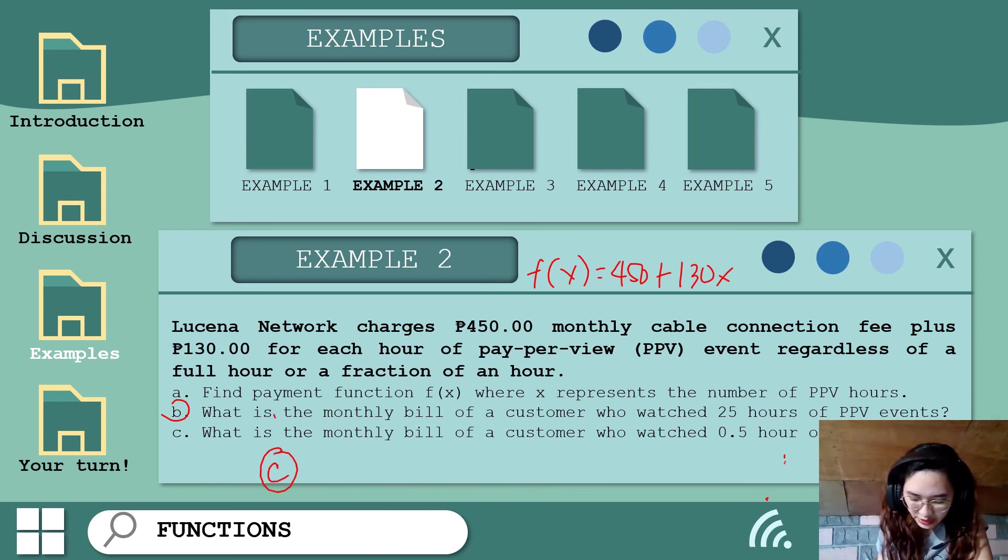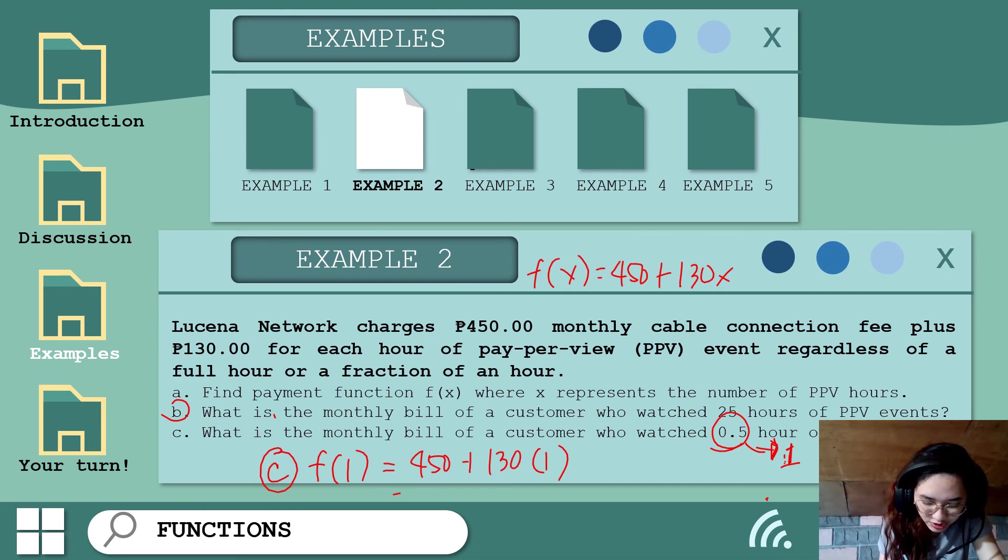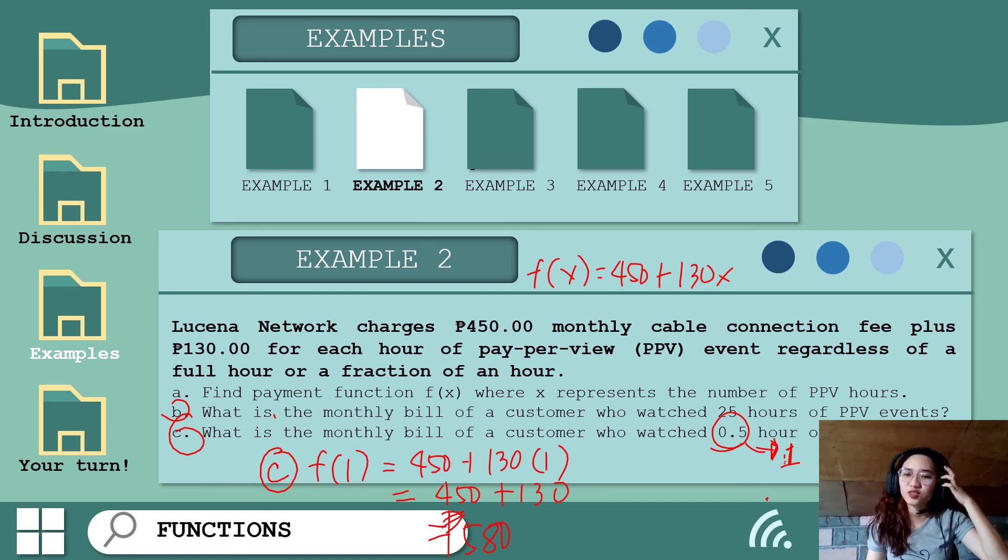What will be the monthly bill of a customer who watched 0.5 hour of pay-per-view event? But in our problem, it says regardless if it's a fraction of an hour, it will still be charged 130 pesos per hour. So 0.5 hours is billed as 1 hour. F(1) = 450 + 130(1) = 450 + 130 = 580 pesos for the customer who watched 0.5 hour.